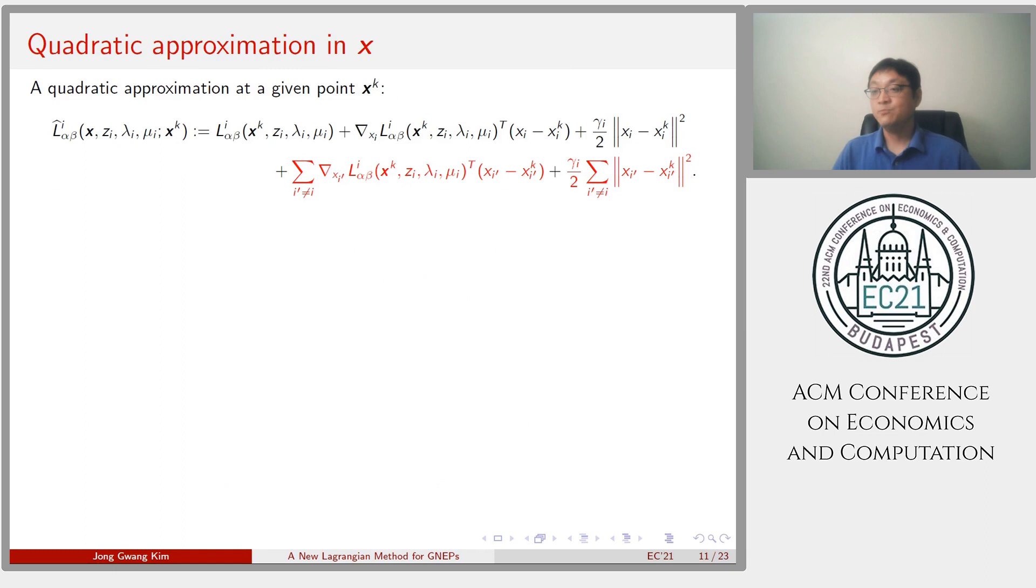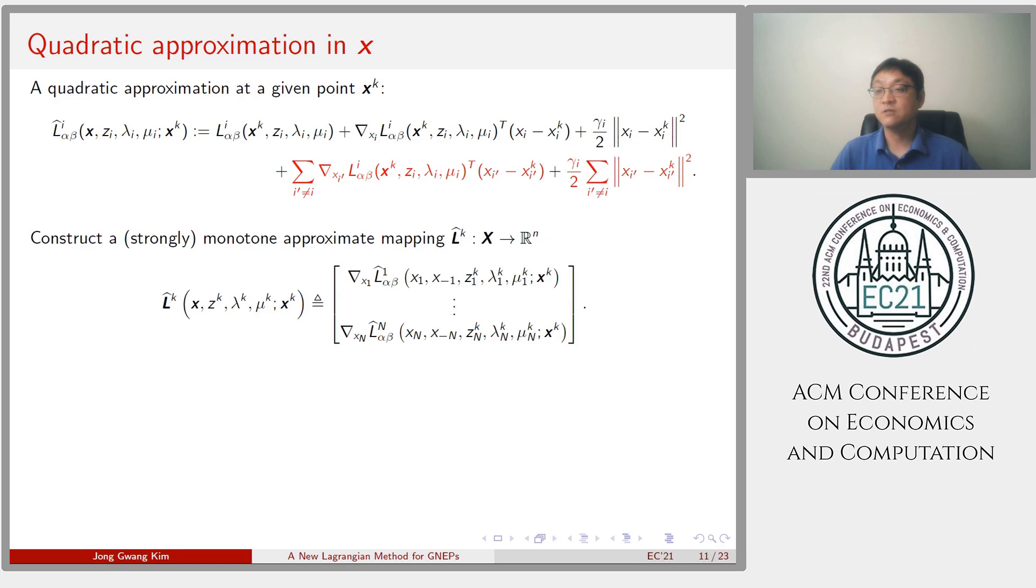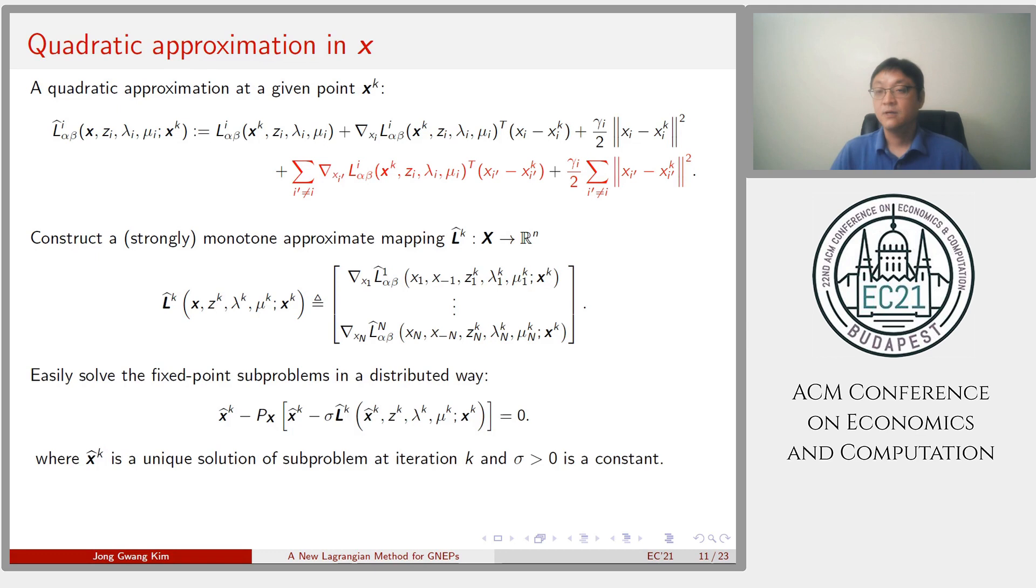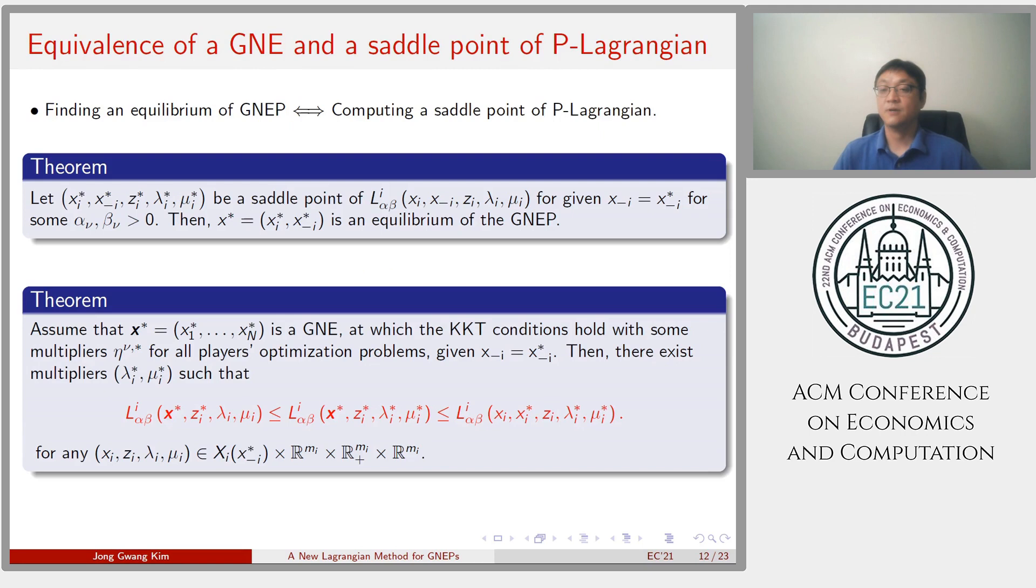Next, to deal with non-convexity, I employ a simple quadratic approximation, L hat in only x. This is a linearized P-Lagrangian at the point x^k combined with the quadratic proximal terms that measure the local errors in the linear approximation. Then, we can construct the strongly monotone approximated mapping by replacing gradients of P-Lagrangians by those of the simple approximate function. Then, we can easily solve the fixed-point problem using gradient-projection step in a distributed way.